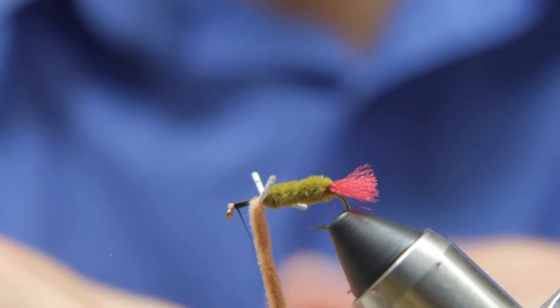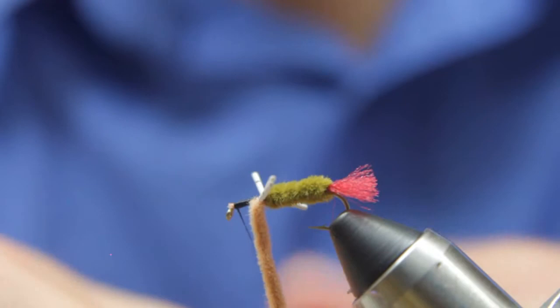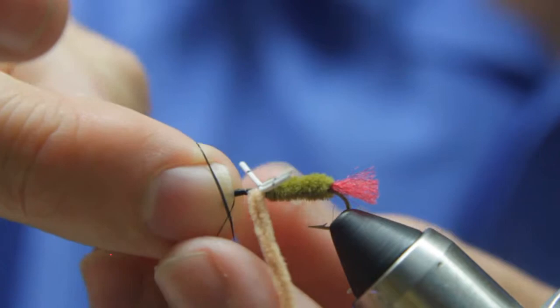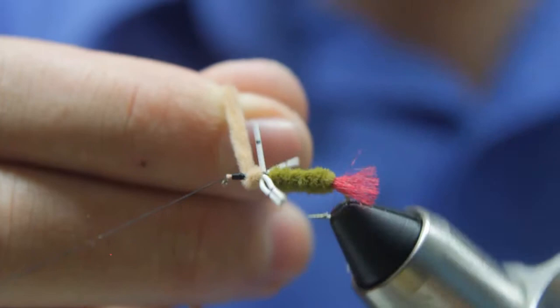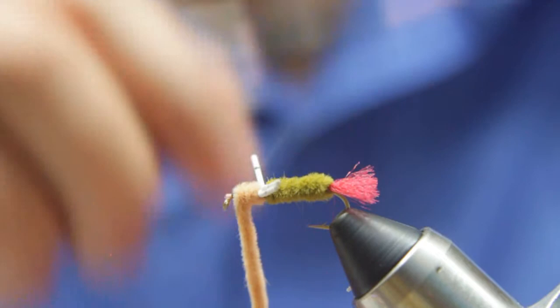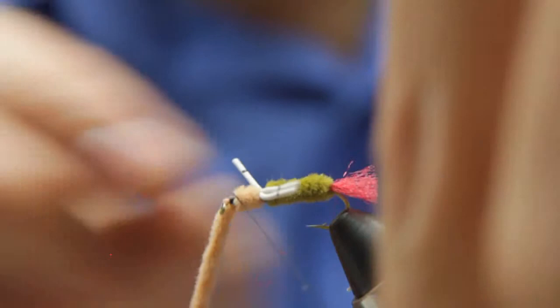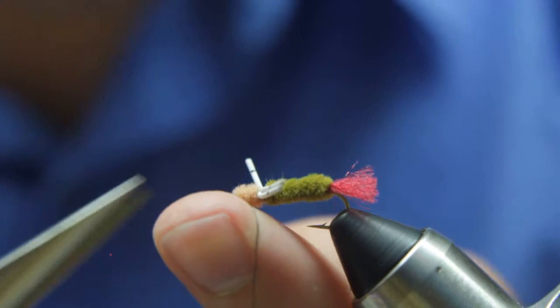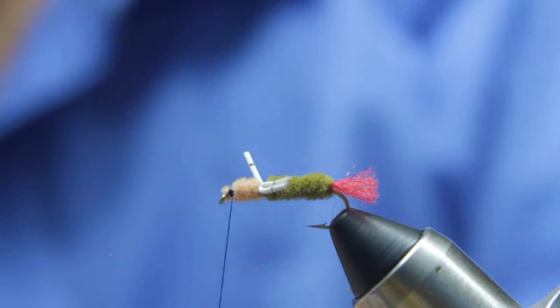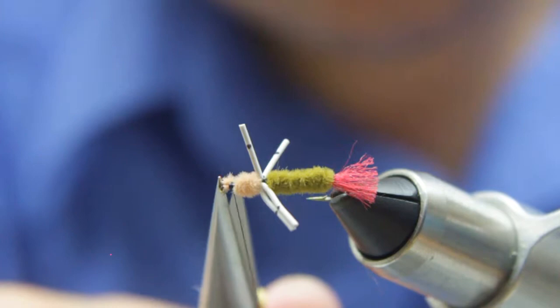Now we're going to wrap the chenille around for the thorax. I'm going to wrap this to just before the index point. And then we'll wrap it off. I've tied the worm chenille off. One, two, and three. And then we'll cut off the worm chenille. Make sure we don't cut the thread. Looks like there's a little more there I need to trim off.